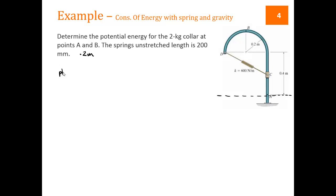If we look at point A, the gravitational, which is MGY or H, is equal to 0 because Y is equal to 0, the datum goes through A. The elastic is 1/2 KS squared.